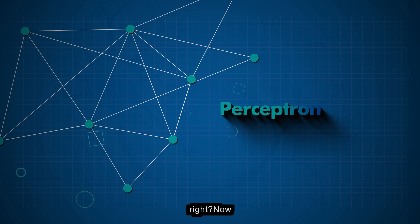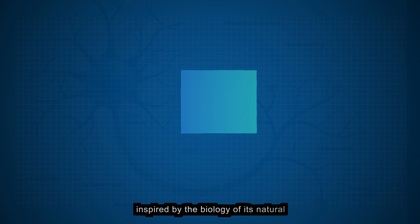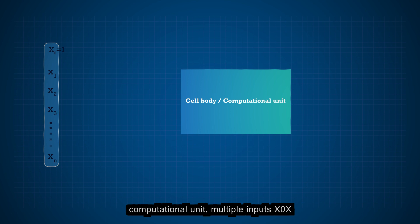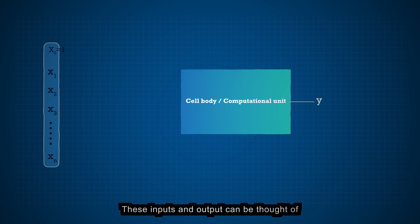Now, let's meet the star of our show, the Perceptron. It's an artificial neuron, inspired by the biology of its natural counterpart. The Perceptron has a computational unit, multiple inputs x0, x1, x2, xn, and a single output y. These inputs and output can be thought of as the dendrites and axon of the biological neuron, respectively.